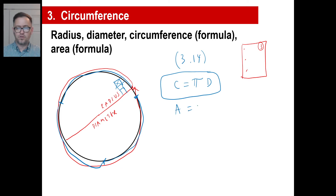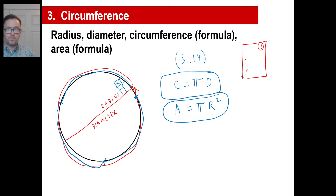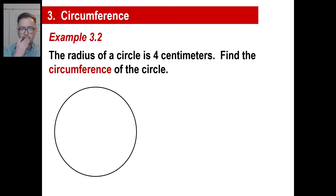So here is the area formula — make sure you write this down in big numbers and letters and memorize it too. A equals pi times the radius squared. It's not the diameter, it's the radius — and not just the radius, but the radius squared. Make sure you memorize those two formulas, or at least refer back to them over and over until you've got them.